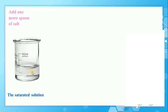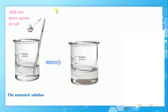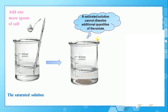Consider this saturated solution of salt and water. Remember that a saturated solution is the solution in which the solvent, which is water, cannot dissolve any more solute, which is salt. Now let's add one more spoon of salt to the saturated solution and stir. Is the added spoon of salt dissolved in water? No, it's not dissolved. It's precipitated at the bottom of the beaker.